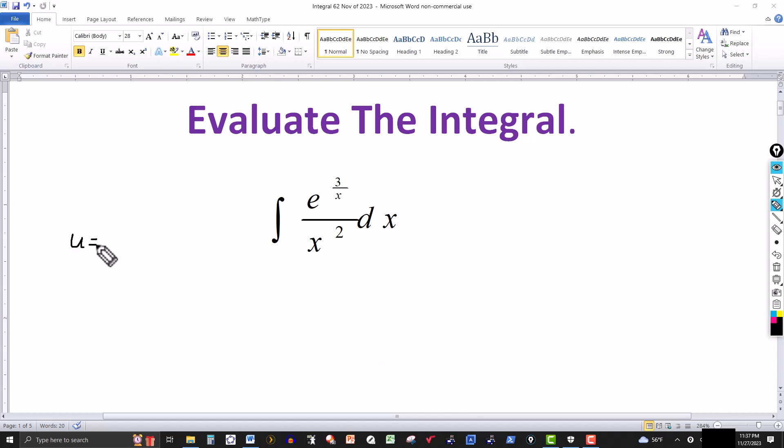So I'm going to let u equal to 3 over x and you're always looking ahead, why do you select or why did I select u to be 3 over x?